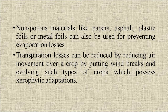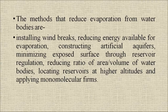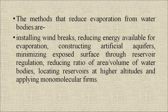Transpiration losses can be reduced by reducing air movement over a crop by putting wind breaks and evolving crops with xerophytic adaptations. Methods that reduce evaporation from water bodies include: installing wind breaks, reducing energy available for evaporation, constructing artificial aquifers, minimizing exposed surface through reservoir regulation, reducing the ratio of area to volume of water bodies, locating reservoirs at higher altitudes, and applying monomolecular films.